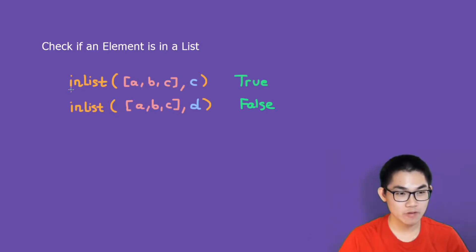So for example, if we have this inList function and we have this list, we can see that c is indeed inside this list, so it will return true. Now how about for this one? Well, we can see that d is not inside this list, so this function will return false.